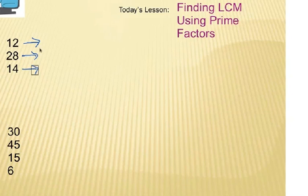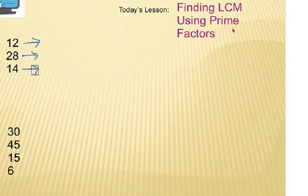Hi, and welcome into this video. We're finding least common multiple, but we're using the prime factor method. The idea is that we're going to take each of these numbers — 12, 28, and 14 — and make a prime factor tree out of each one of them. We're going to find their prime factors.